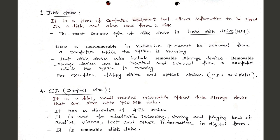CD stands for Compact Disk. It is a flat, small, rounded recordable optical data storage device that can store up to 700 MB of data. It has a diameter of 4.75 inches. It is used for electronic recording, storing, and playing back of audios, videos, text, and other information in digital form. It is a removable disk drive.